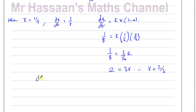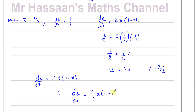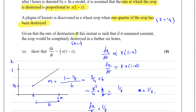So we know that dx/dt equals k·x(1 minus x), and we've shown that dx/dt equals (2/3)x(1 minus x). That's a difficult one, actually — you have to think a little bit. The key is this statement: 'such that if it remained constant' — the rate of destruction remains constant means this is a straight line from a quarter to the time it's completely destroyed. That gradient is constant, and the gradient at that point is the key to working out k.